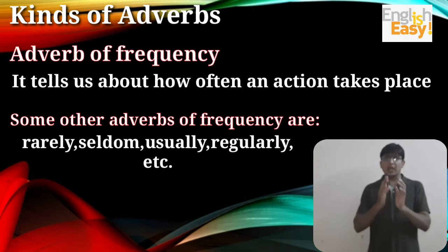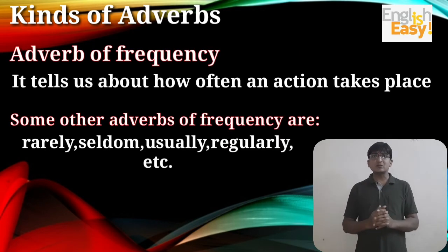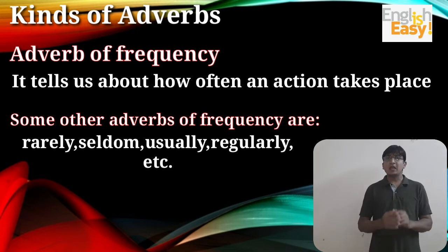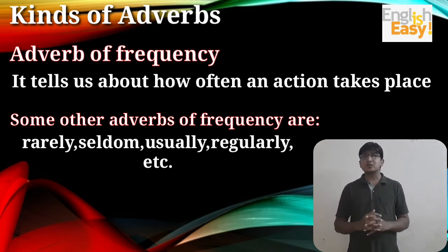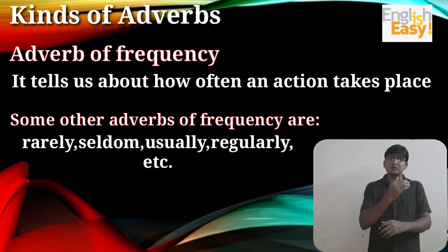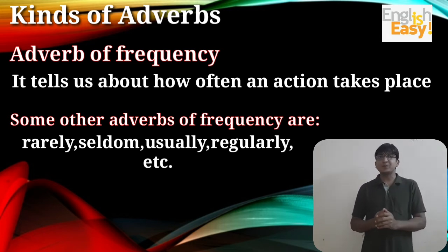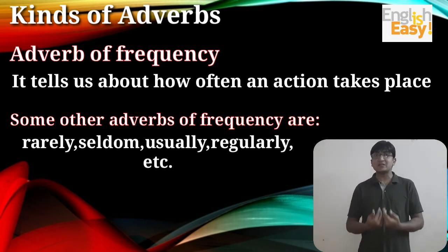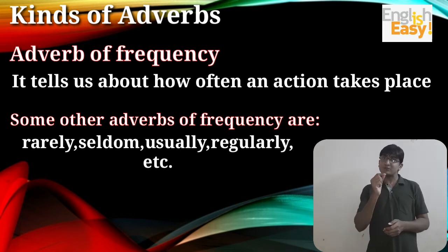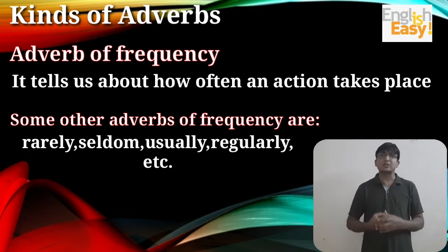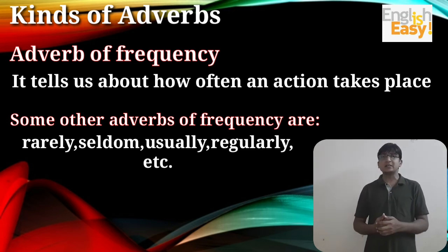Adverb of frequency tells us about how often an action takes place. And remember, sometimes this also tells us about number. For example, I brush my teeth twice in a day. Here, twice is an adverb of frequency. But when we look at the word twice, it looks like a number. So that's why sometimes we can consider it as a number.